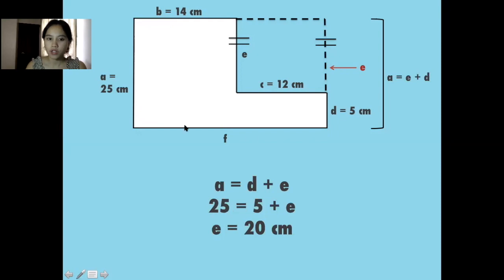25 is equal to 5 plus e. But since we don't know what e is, we need to think of what number you add to 5 to get 25. And that number is 20. So e is equal to 20.